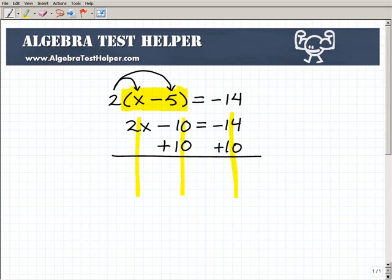So now I have 2x plus nothing is 2x. Negative 10 plus 10 is 0. So on the left-hand side of the equation, it just leaves me with 2x. So I'm getting closer. It's not x, but it's not 2x minus 10. I just have 2x. We're going to take this thing step by step. So we have 2x on the left-hand side, and on the right-hand side I have negative 14 plus 10. So what's that? What's negative 14 plus 10? Another area where students are weak when solving equations. That's negative 4.